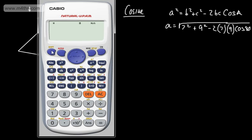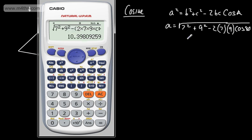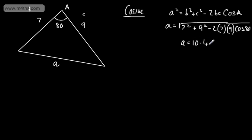Make sure your calculator is in degrees mode — shift, mode, 3. We take the square root of 7 squared plus 9 squared, then subtract 2 times 7 times 9 times the cosine of 80 degrees. We end up with 10.398, so A is equal to 10.4 to one decimal place. If you're doing this in an exam, write down your calculator display and then round to a reasonable level of accuracy, or one that you're given.